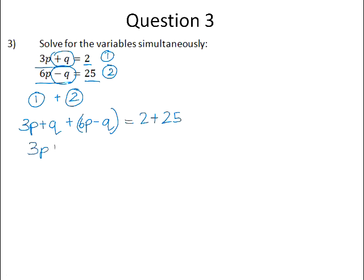That gives us 3p plus q plus 6p minus q is equal to 27. The plus q and the minus q adds up to 0. We eliminate the q's, and we're left with 9p is 27. Divide both sides by 9, and your p is equal to 3.